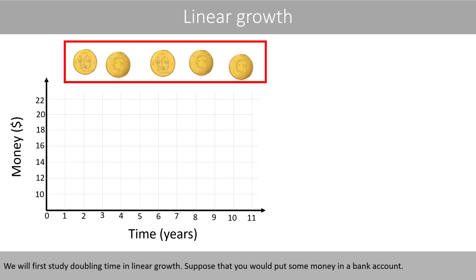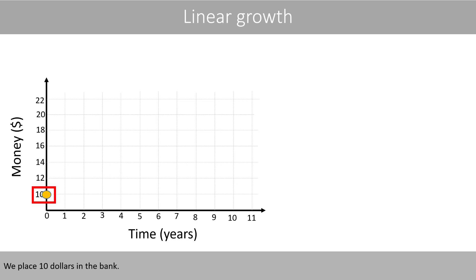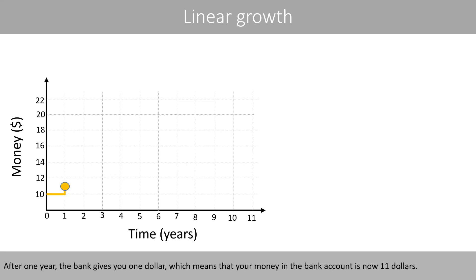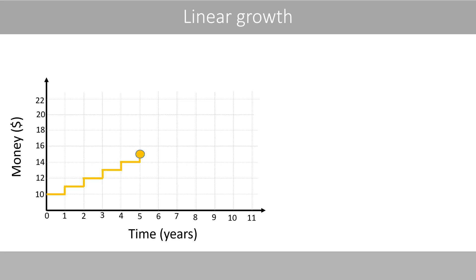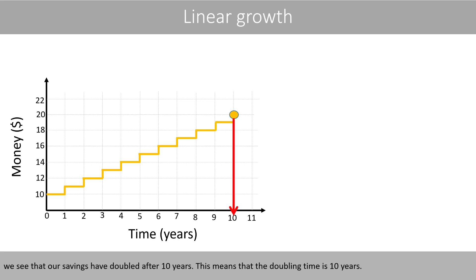Suppose that you put some money in a bank account. We place ten dollars in the bank. After one year, the bank gives you one dollar, which means that your money in the bank account is now eleven dollars. Then you wait another year until the bank gives you one dollar again. If you continue like this, we see that our savings have doubled after ten years.